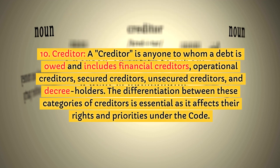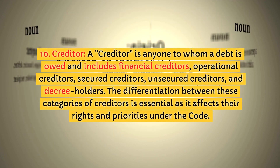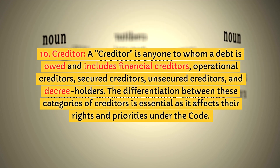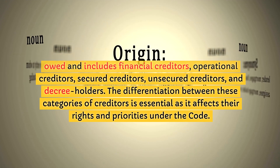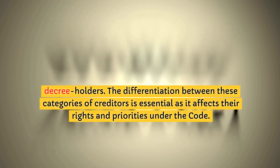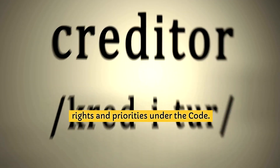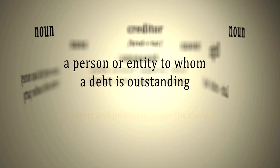10. Creditor. A 'Creditor' is anyone to whom a debt is owed and includes financial creditors, operational creditors, secured creditors, unsecured creditors, and decree holders. The differentiation between these categories of creditors is essential as it affects their rights and priorities under the code.